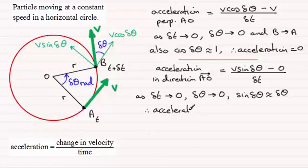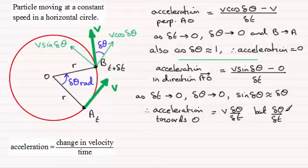So when we look at the acceleration directed towards the center here, the acceleration towards O. Well that's going to be equal to V times delta theta divided by delta t. But delta theta over delta t is angular speed and we call that omega.